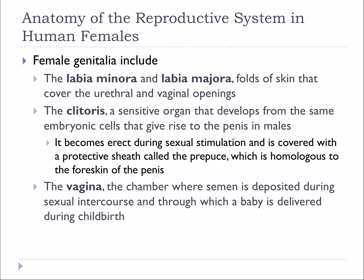These are folds of skin that cover the openings for the urethra, which is where urine is expelled, and the vaginal openings, which is where copulation is going to occur. The clitoris is a sensitive organ that develops from the same embryonic tissue that gives rise to the penis in males, and it's involved in sexual stimulation.